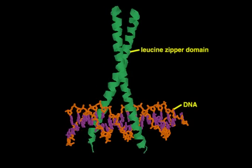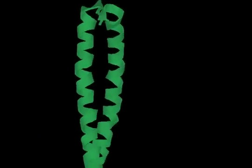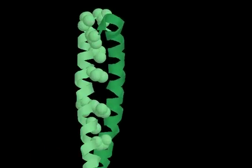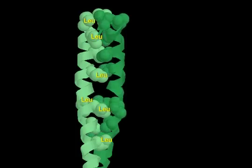A leucine zipper domain is comprised of two long, intertwined alpha helices. Hydrophobic side chains extend out from each helix into the space shared between them. Many of these hydrophobic side chains are leucines, giving this domain its name.